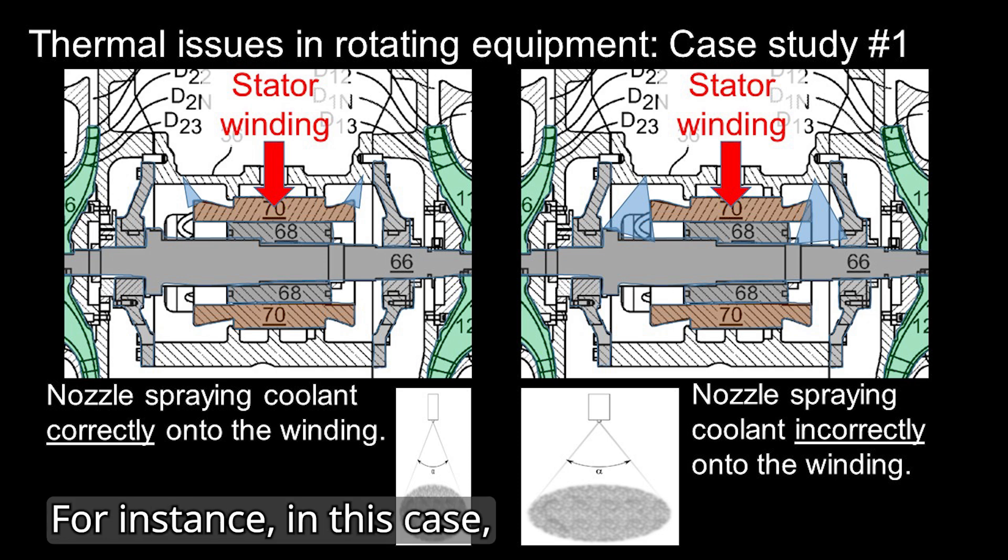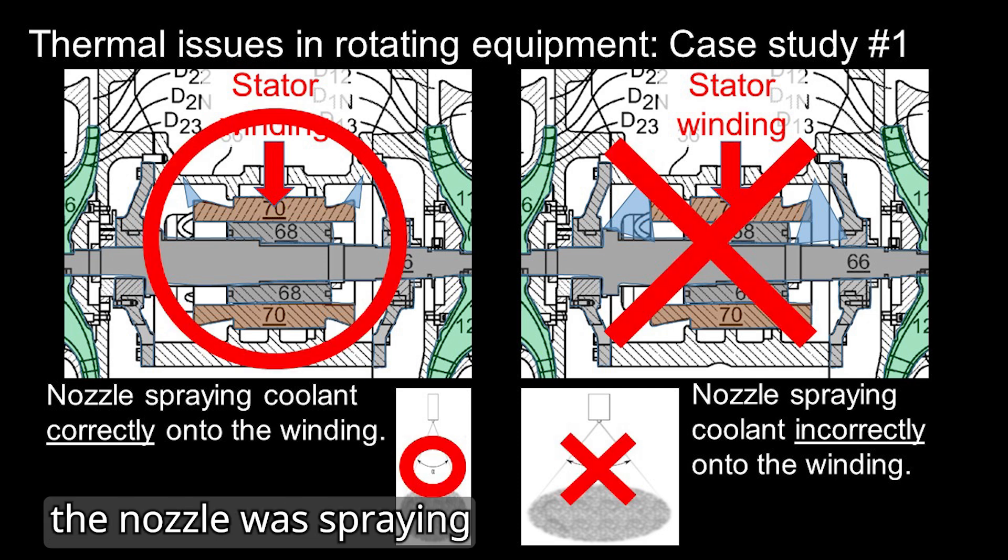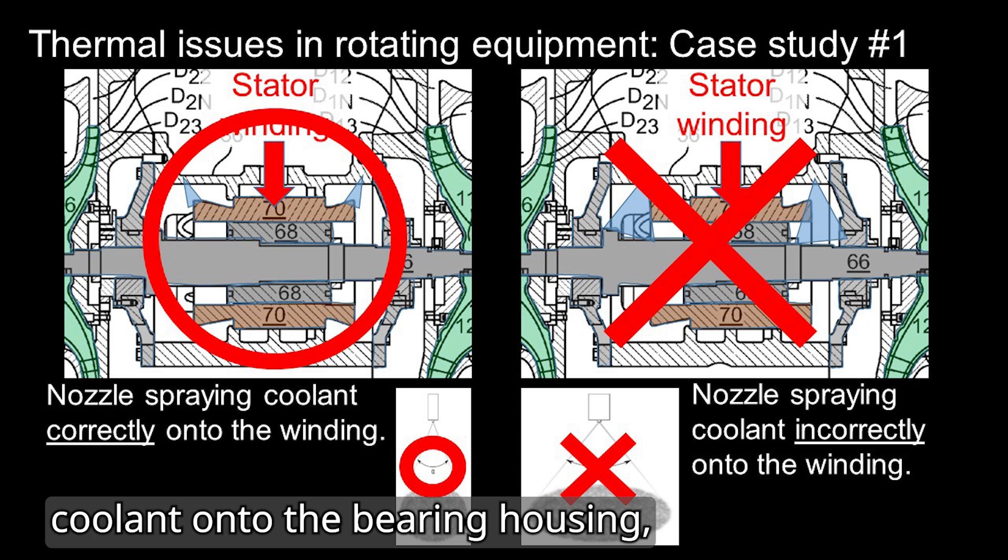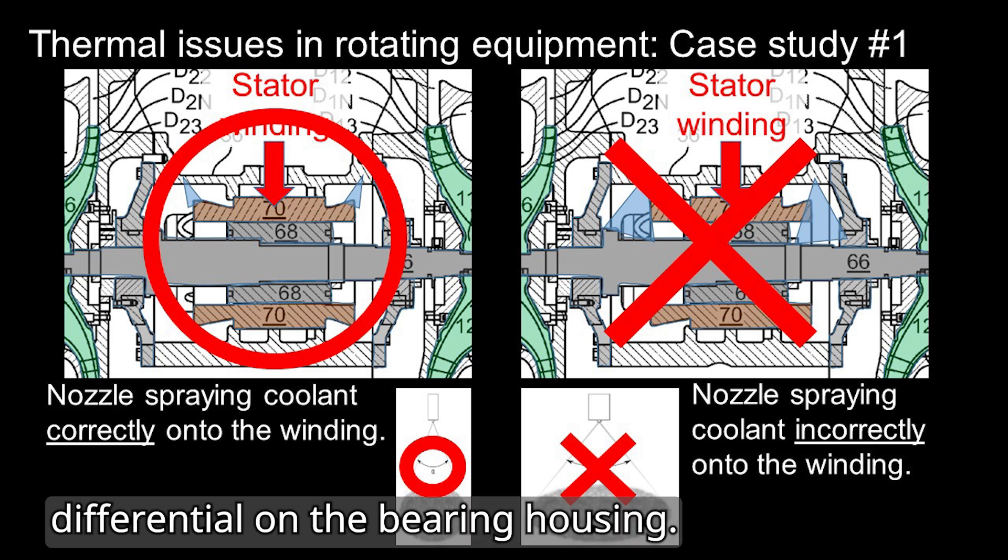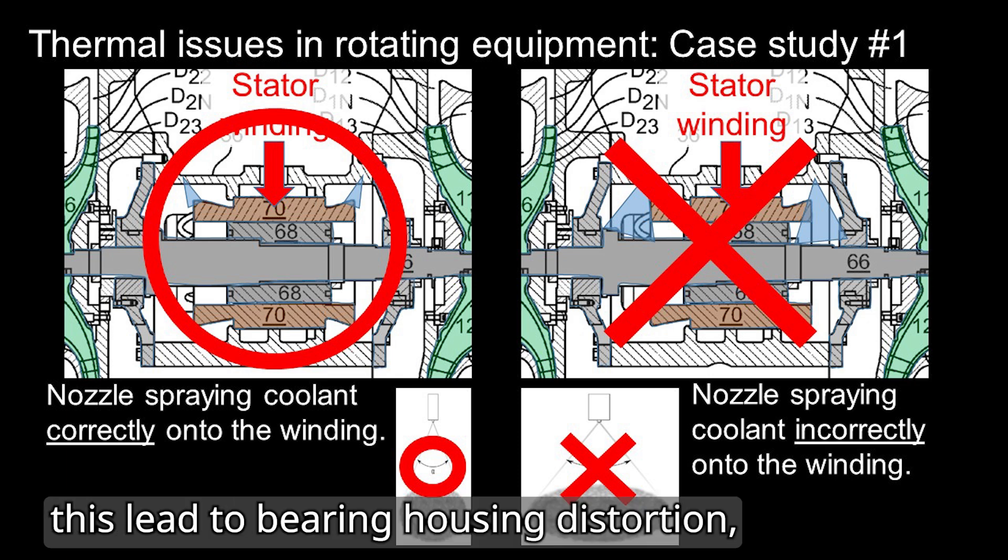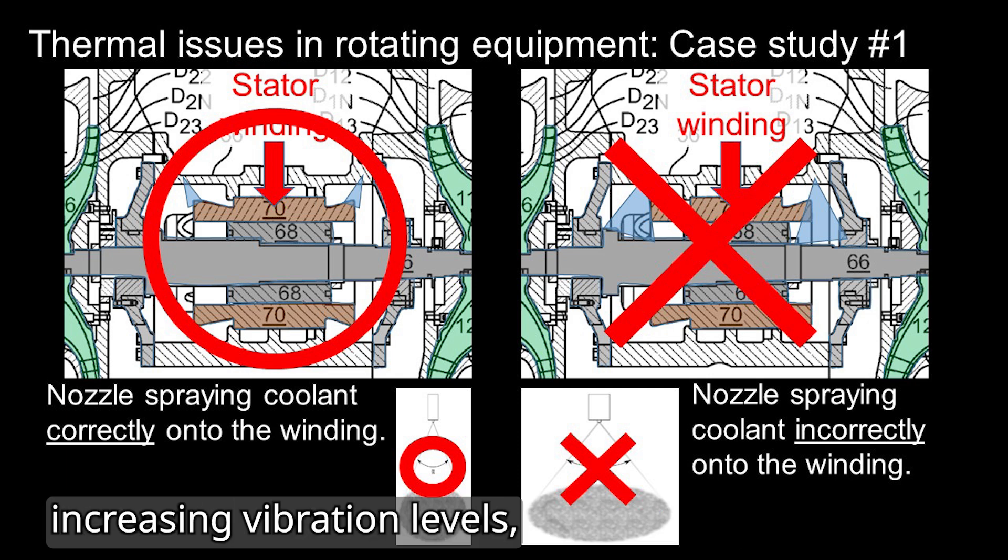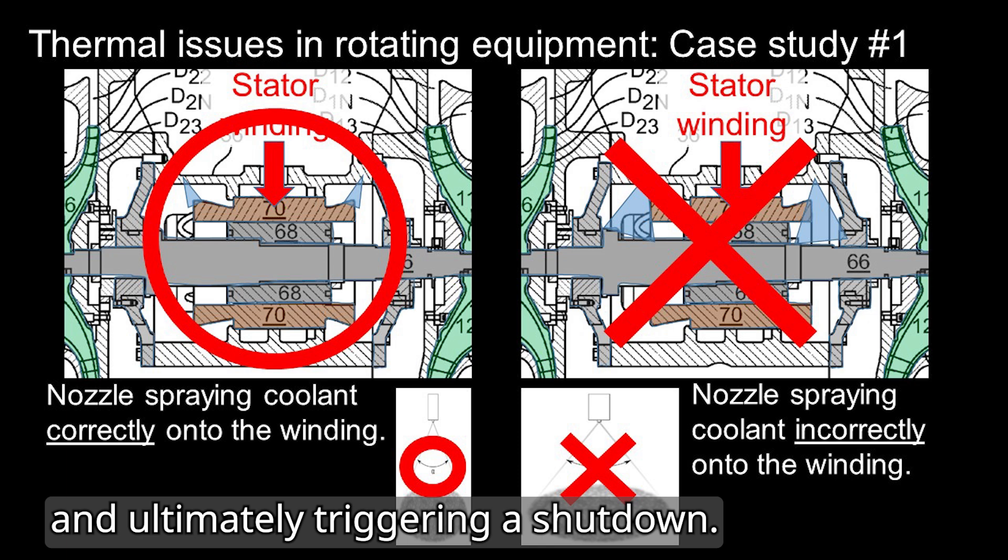For instance, in this case, the nozzle was spraying coolant onto the bearing housing, causing temperature differential on the bearing housing. Over time, this led to bearing housing distortion, increasing vibration levels, and ultimately triggering a shutdown.